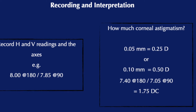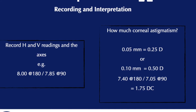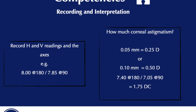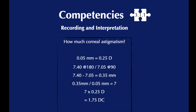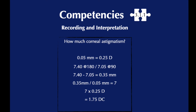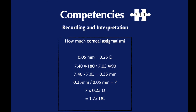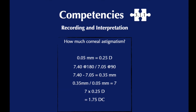Here's the most important part: for every 0.05 mm measured, that represents 0.25 diopters of astigmatism. For example, if the findings are 7.05 at 90 degrees and 7.40 at 180 degrees, that is a difference of 0.35 mm. 0.35 divided by 0.05 equals 7, and 7 times 0.25 equals 1.75. Therefore, this patient would have 1.75 diopters of corneal astigmatism. Also remember that the flatter meridian is represented by the larger number and the steeper meridian is represented by the smallest number.